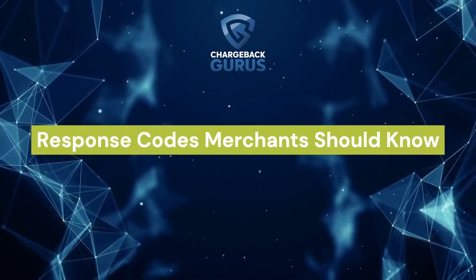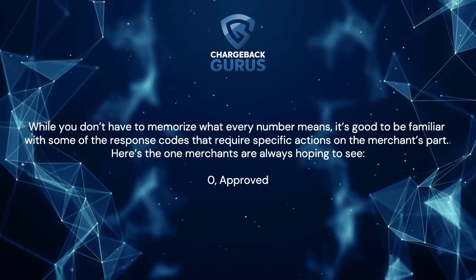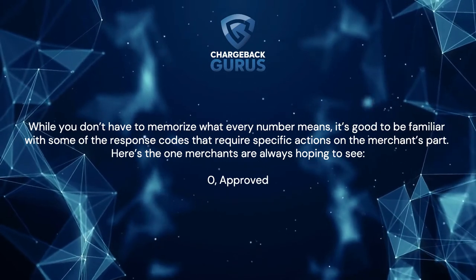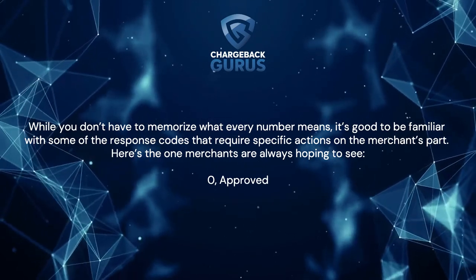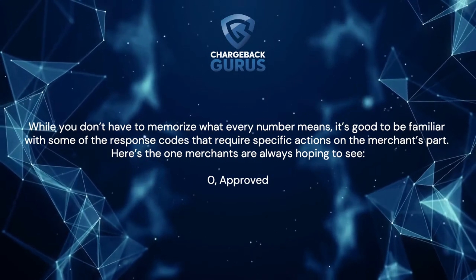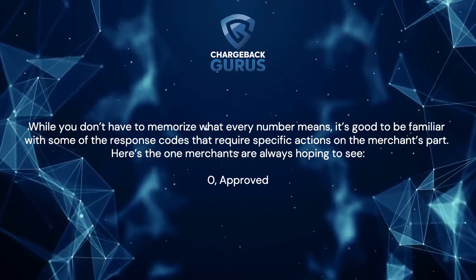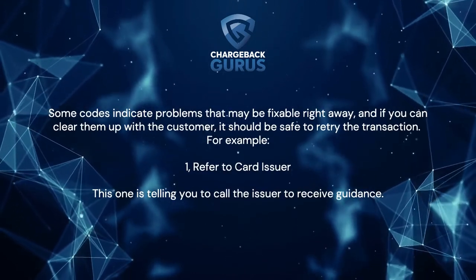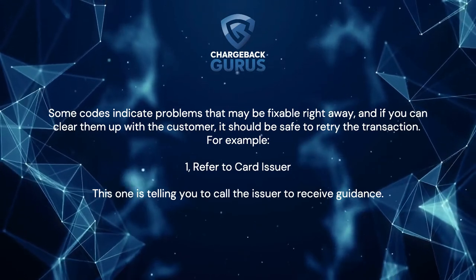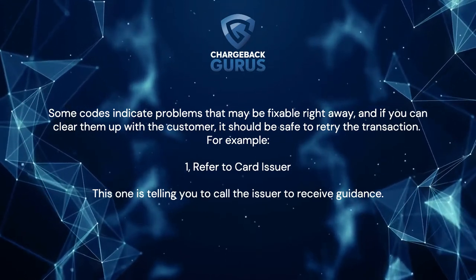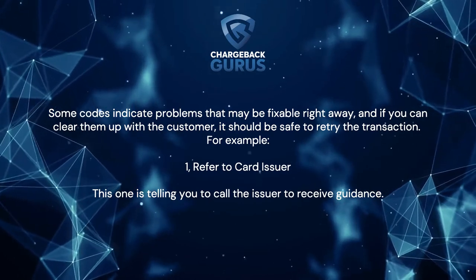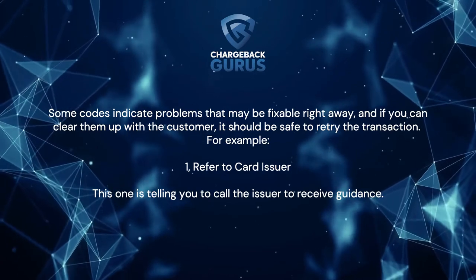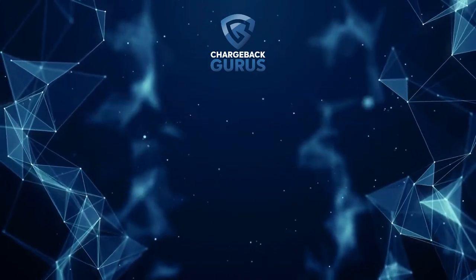Response codes merchants should know. While you don't have to memorize what every number means, it's good to be familiar with some of the response codes that require specific actions on the merchant's part. Here's the one merchants are always hoping to see: Code 0 — Approved. Some codes indicate problems that might be fixable right away, and if you can clear them up with the customer, it should be safe to retry the transaction. For example, Code 1 — Refer to card issuer. This one is telling you to call the issuer to receive guidance.